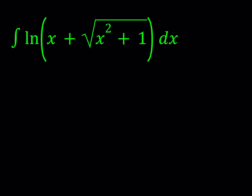Integration by parts basically comes from the product rule, which is the derivative of the product of something like u times v. So we have the integral of u times dv, and it can be written as uv minus the integral of v times du. The purpose here is to turn this integral u dv into something that is easier to integrate, like v du. If that doesn't work, then it just doesn't work.